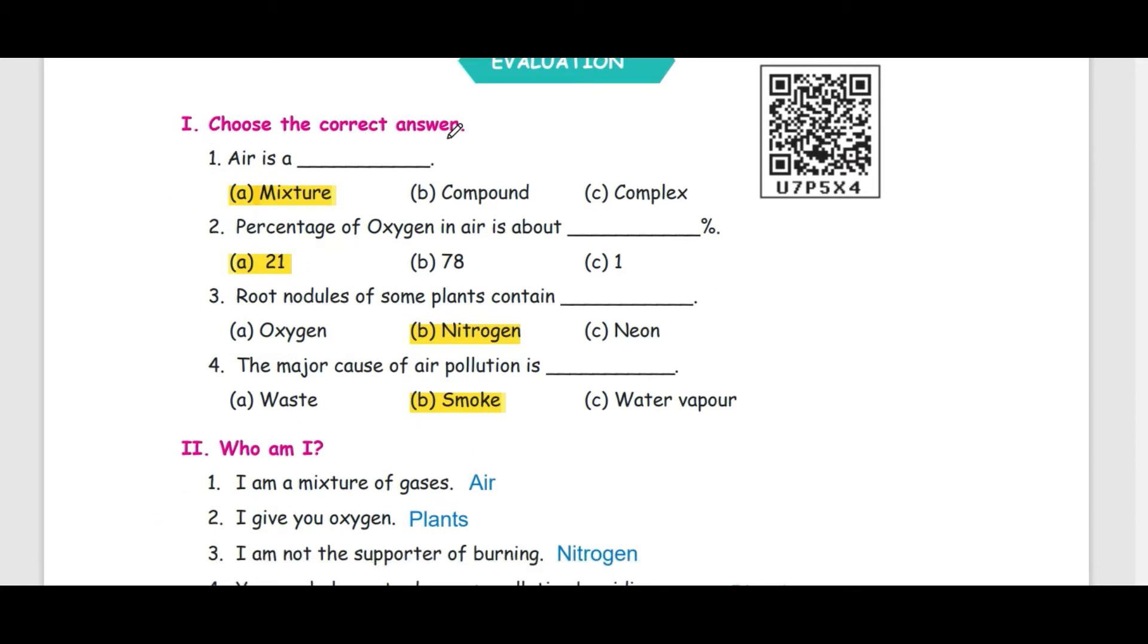Choose the correct answer. Air is a mixture. Percentage of oxygen in air is about? Oxygen is 21%.